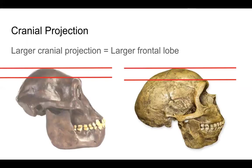The first measurement you're going to take is cranial projection. Generally speaking, a larger cranial projection indicates a more developed frontal lobe, which is the portion of the brain responsible for reasoning, problem solving, planning, and emotion. You can see here I have some lines on the skulls — cranial projection is essentially this space in between here, and I'll explain next how we measure that.